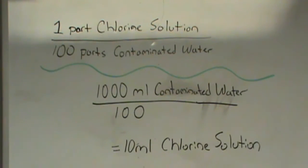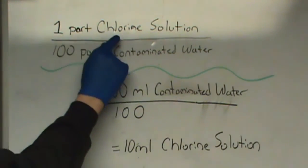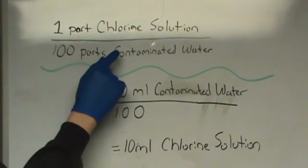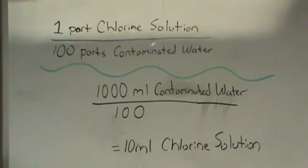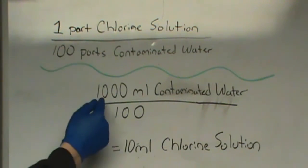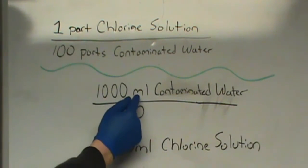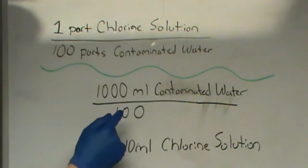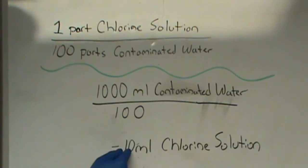While we're waiting for the calcium hypochlorite to dissolve into the water, we're going to go over the ratios that we will employ to utilize that chlorine solution to process contaminated water. And that ratio is one part chlorine solution to 100 parts contaminated water. So we can rewrite that equation so that if I have 1000 milliliters or one liter of contaminated water, I divide that by 100, which tells me that I need 10 milliliters of my chlorine solution added to this to make it potable, to kill the bacteria that is in it.